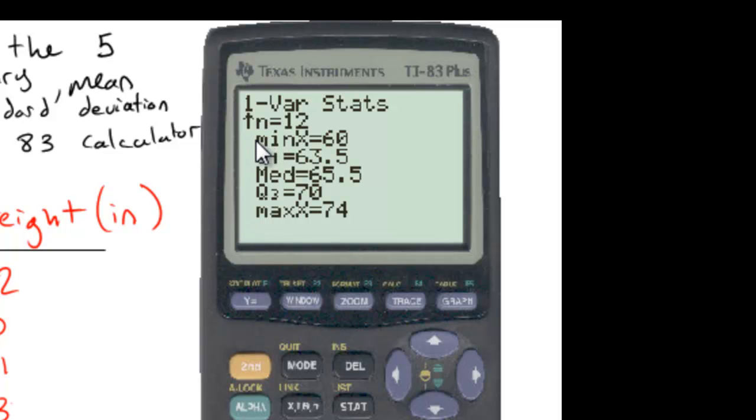You can see it will tell me if I scroll down the five number summary: the minimum, the first quartile, the median, the third quartile and the maximum value.